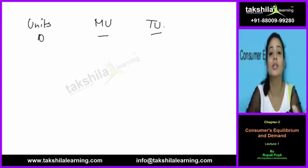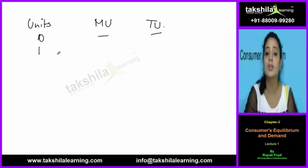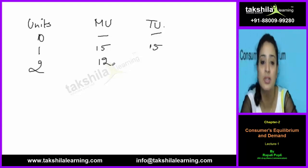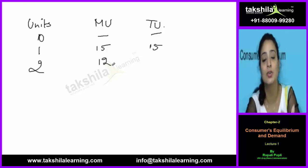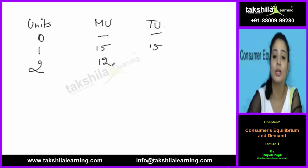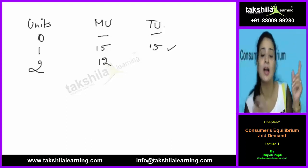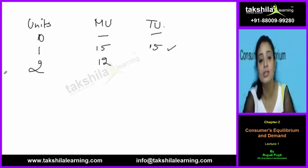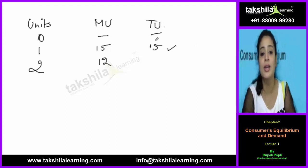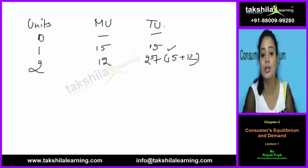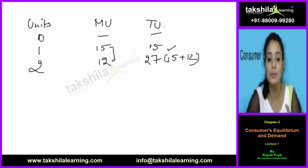If you consume 1 unit, MU is 15 utils, so total utility is 15. If you consume a second unit, MU is 12 utils — because the second time you get a little less satisfaction than the first. Total utility becomes 15 plus 12, which is 27. So total utility is the summation of all marginal utilities up to that level.